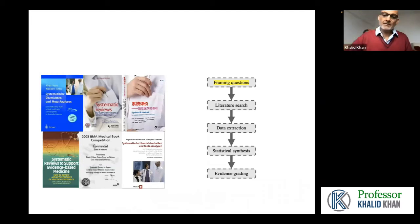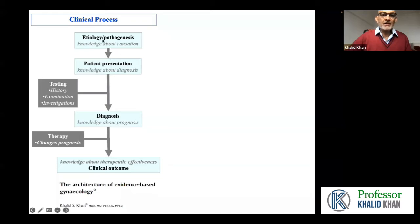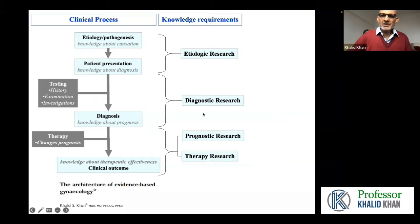To conduct a meta-analysis, it is important to understand first how a question is framed, because this is what allows us to construct our plan for meta-analysis. In order to understand that question framing is part of clinical practice, think about a patient presenting to you in clinic. You have to make a diagnosis and then give them treatment. Before you can make a diagnosis, you need some understanding of etiology and pathogenesis, and this flow ultimately leads to improvement of outcome. For each different step, there are different types of research: etiologic, diagnostic, prognostic, and therapeutic research.